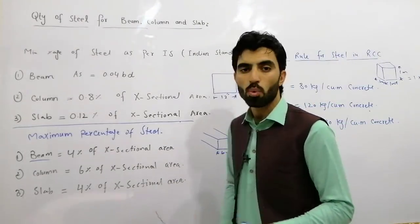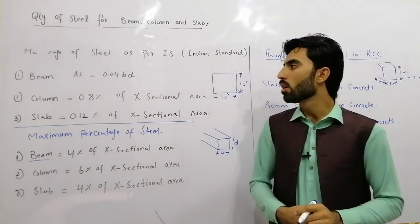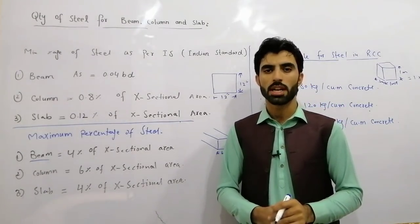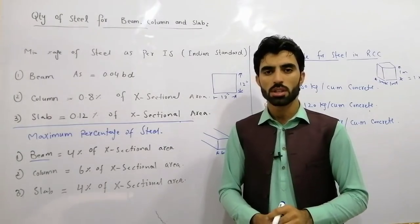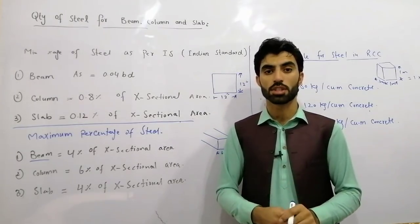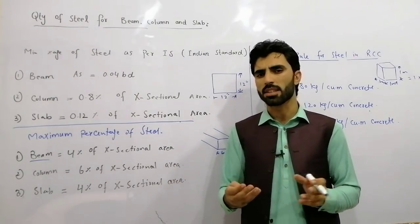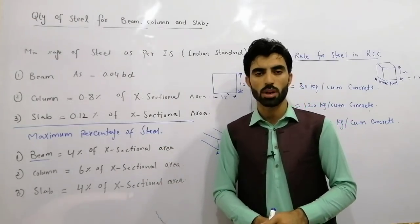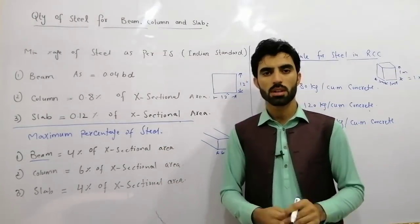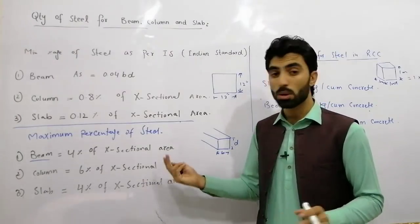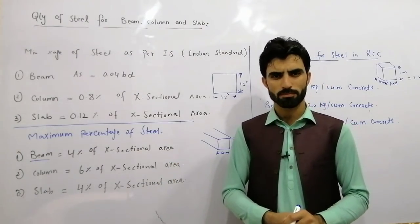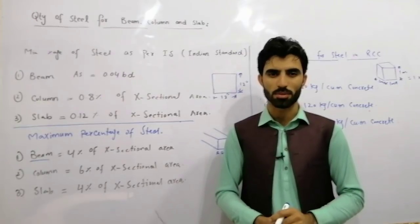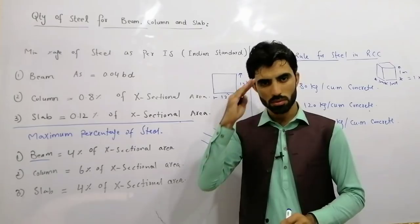This is the way to find the minimum and maximum quantity of steel, and by thumb rule. First of all, try to do a proper structural design to find the quantity of steel accurately. But if you need a quick estimate using minimum, maximum, or thumb rule values, use the formulas discussed. If you have any questions, feel free to comment and I'll reply. Thanks for watching — see you in the next video, goodbye.